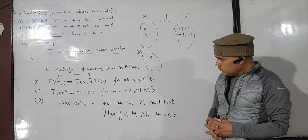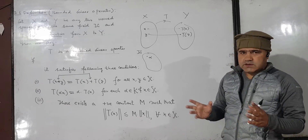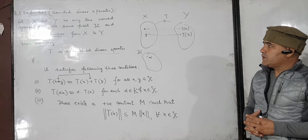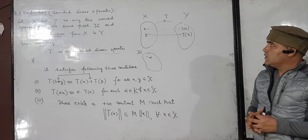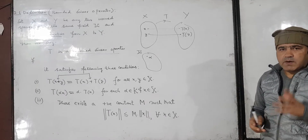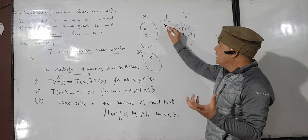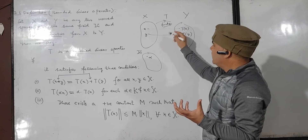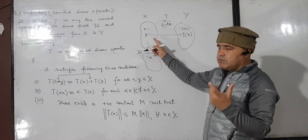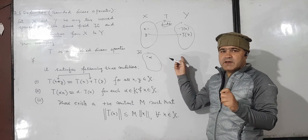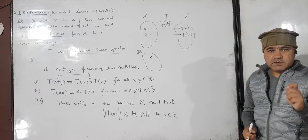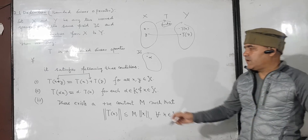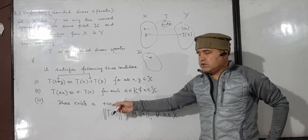So let's recall the definition once again. A bounded linear operator is a function with both domain and co-domain as norm spaces over the same field, satisfying the following three conditions.